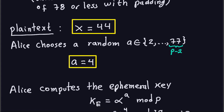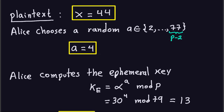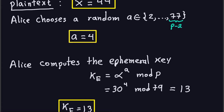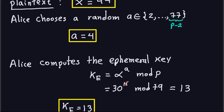A random number between 2 and 77 — let's say it's 4. Alice is going to compute the ephemeral key, which is sent through the channel and which Bob will use to compute the shared key. The ephemeral key K_E equals alpha^A mod P. Alpha is 30, A is 4, modulo 79. This gives 13. That's the ephemeral key.